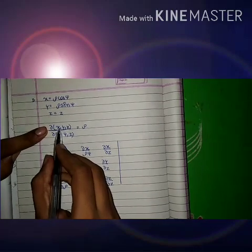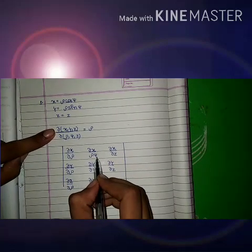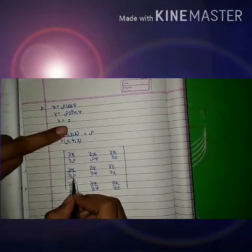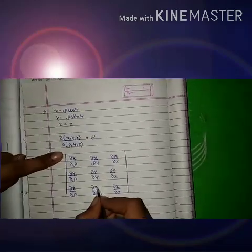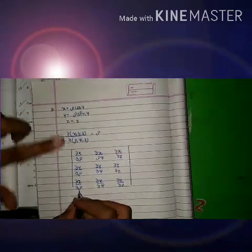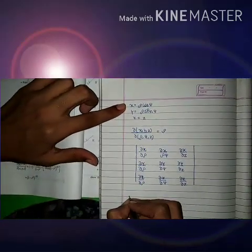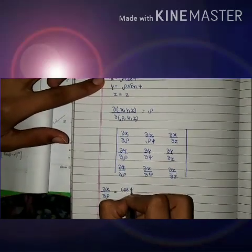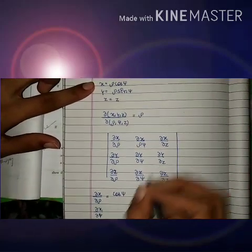We will differentiate each variable in turn. x will be differentiated first with respect to ρ, then with respect to ψ, then with respect to z. Similarly for y and z. Now differentiating x with respect to ρ using the UV rule, we get ∂x/∂ρ = cosψ.